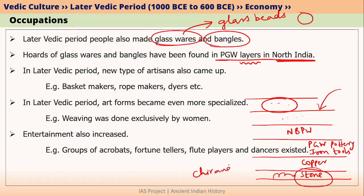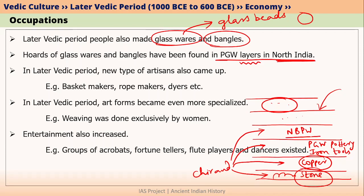For example, consider Chirand in Bihar — it was a Neolithic site where stone tools and bone tools can be found. Hypothetically, Chalcolithic people could also have settled there, so copper tools could be found. Chirand falls in the Videha kingdom, so later Vedic people could also have settled there, giving PGW pottery and iron tools. Chirand is also close to Pataliputra, which was very important during the Mahajanapada period, so northern black polished ware pottery could also be found. In modern times, Chirand is still occupied, so modern evidence could be found as well. This way, within a single place, you can find different artifacts in different layers.